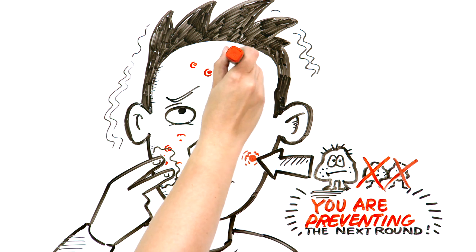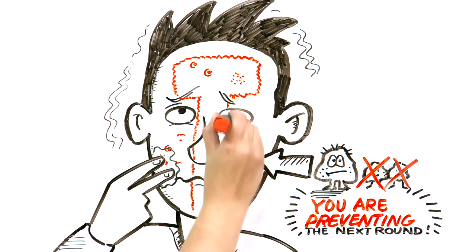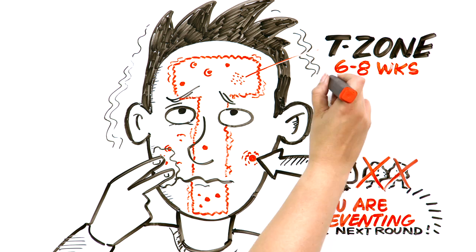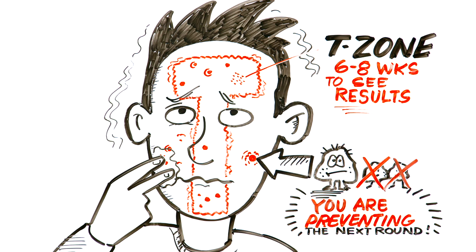So if you are applying a cream, it needs to go on where you get pimples. For most people, this is in what we call the T-zone. It takes six to eight weeks and sometimes longer to see if acne treatment is working.